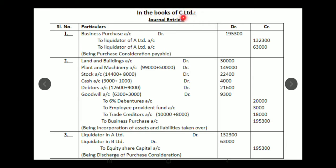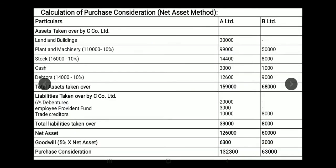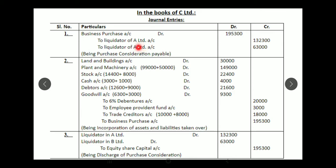Now we move to journal entries in the books of C Limited, the purchasing company. The first journal entry is: Business Purchase Account Dr. to Liquidator of A Company Account and Liquidator of B Company Account. C Limited owes A Limited's liquidator 1,32,300 and B Limited's liquidator 63,000. Total purchase consideration payable by C Limited is 1,95,300.